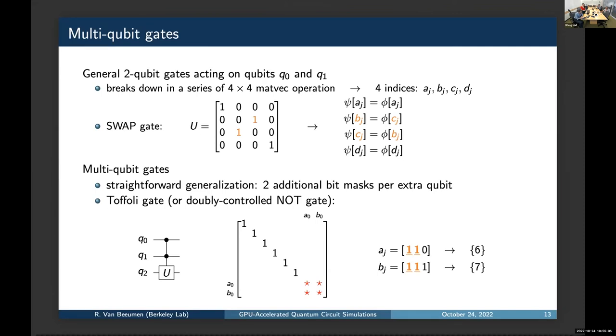And especially for multi-controlled multi-qubit gates, for example, the Toffoli gate or the doubly controlled not gate here, this technique is very efficient because the more controls you have, the less elements in the vector we have to update. For example, here, although we have a state of length eight, we only have to update two elements in the vector, so we only do one local operation.